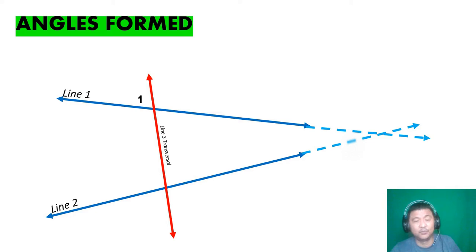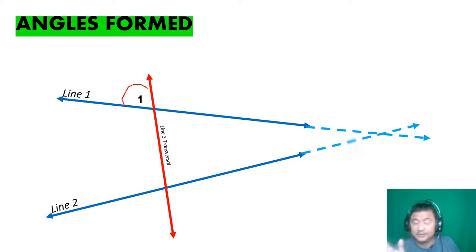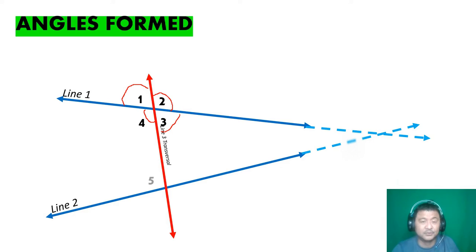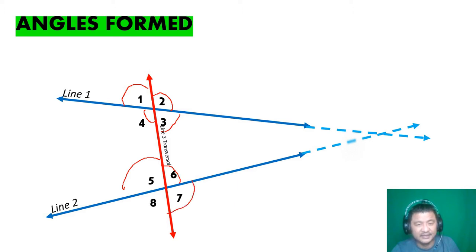Look at these angles and remember their names. There is angle one — it has a certain degree, probably greater than 45 degrees. Then angle two, angle three, angle four — they are all measured in degrees. On the other side, below, we also have angle five, angle six, angle seven, and angle eight.